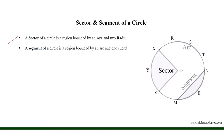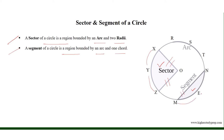A sector of a circle is a region bounded by an arc and two radii. For example, the sector X, O, Z is bounded by arc X, Y, Z and two radii O, X and O, Z. A segment of a circle is a region bounded by an arc and one chord. For example, the segment M, E, N is bounded by the chord M, N and arc M, E, N.